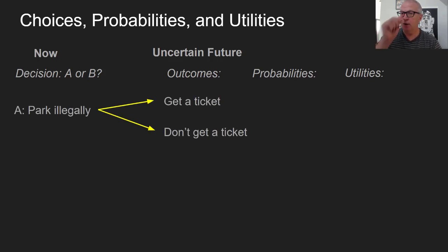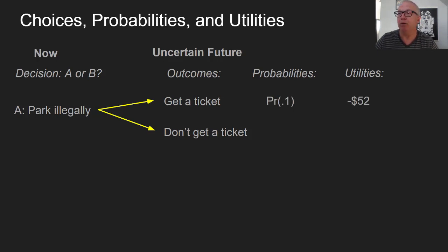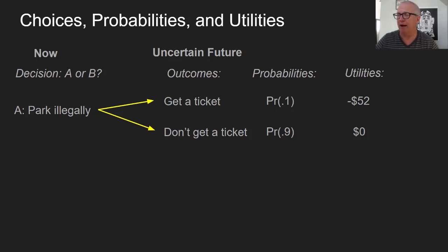Imagine you're faced with a choice to either park illegally, which would have one of two outcomes: you'd either get a ticket or you wouldn't. Suppose you estimate the probability of getting a ticket is 0.1, or 10%, and the cost of a ticket is $52. The probability of not getting a ticket is 0.9, and the utility of not getting a ticket is 0 — status quo, your wallet stayed the same. You didn't get anything, you didn't lose anything.